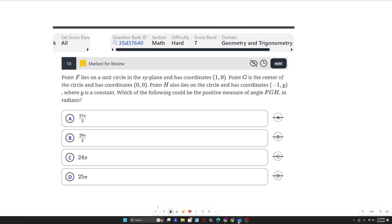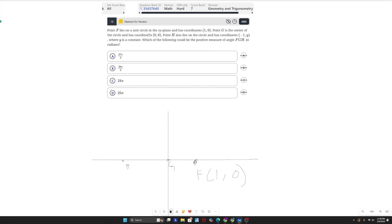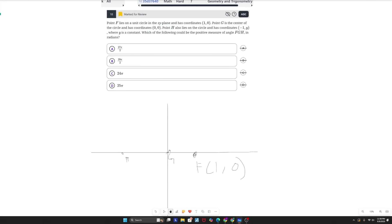So you guys do have to know how to solve these types of questions. But anyway, getting into the question, we have point F lies on a unit circle in the XY plane and has coordinates 1, 0, which I've modeled right here. Point G is the center of the circle and has coordinates 0, 0. And point H also lies on the circle and has coordinates negative 1, y, where y is a constant. Which of the following could be the positive measure of angle FGH in radians?